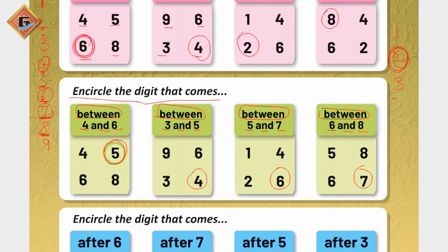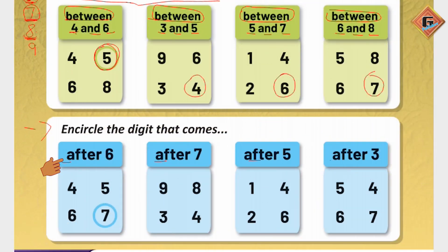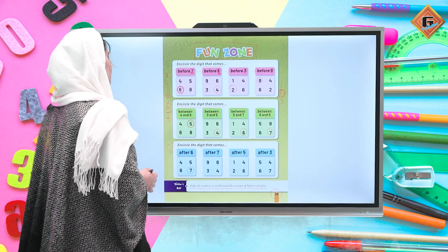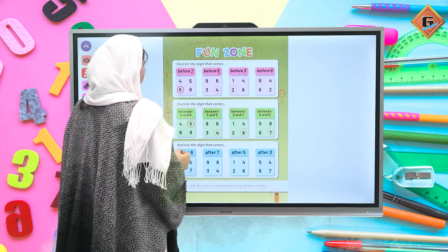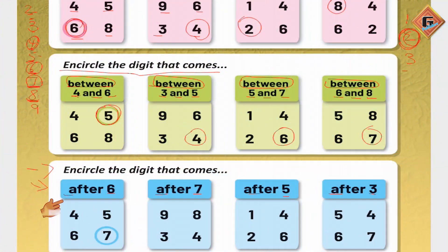Now moving to the next concept, which is 'after.' We have to see what comes after six, seven, eight, five, and three. The meaning of after is 'baad mein' — what comes after. Before means 'pehle,' between means 'dhermiyan mein,' and after means 'ke baad' — what comes after a number.